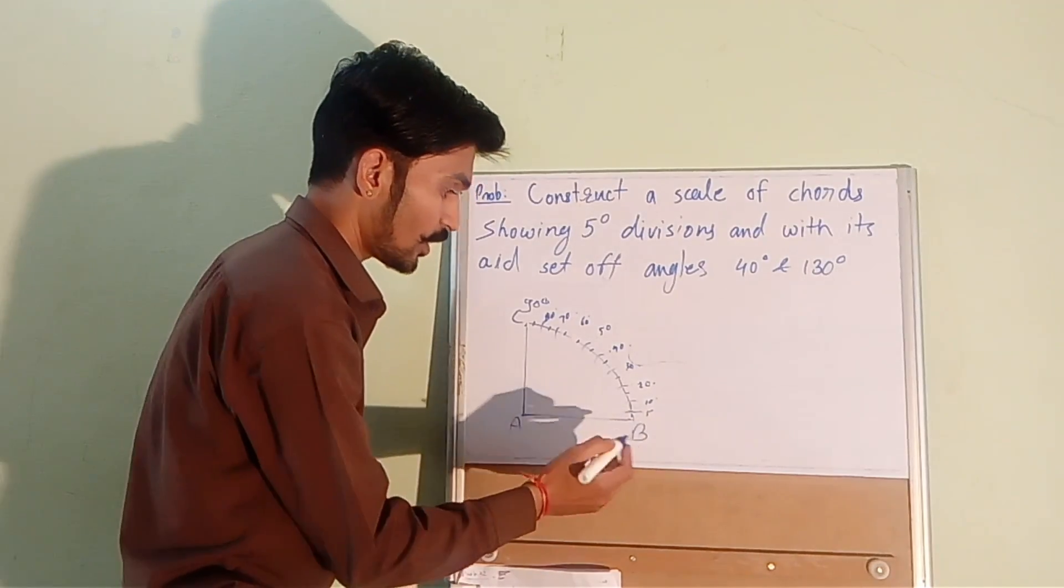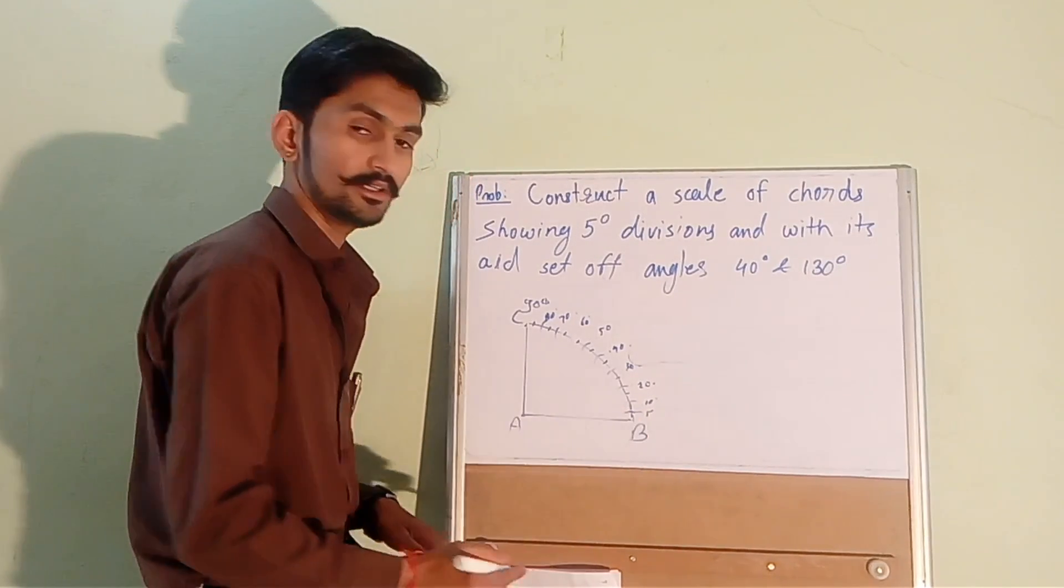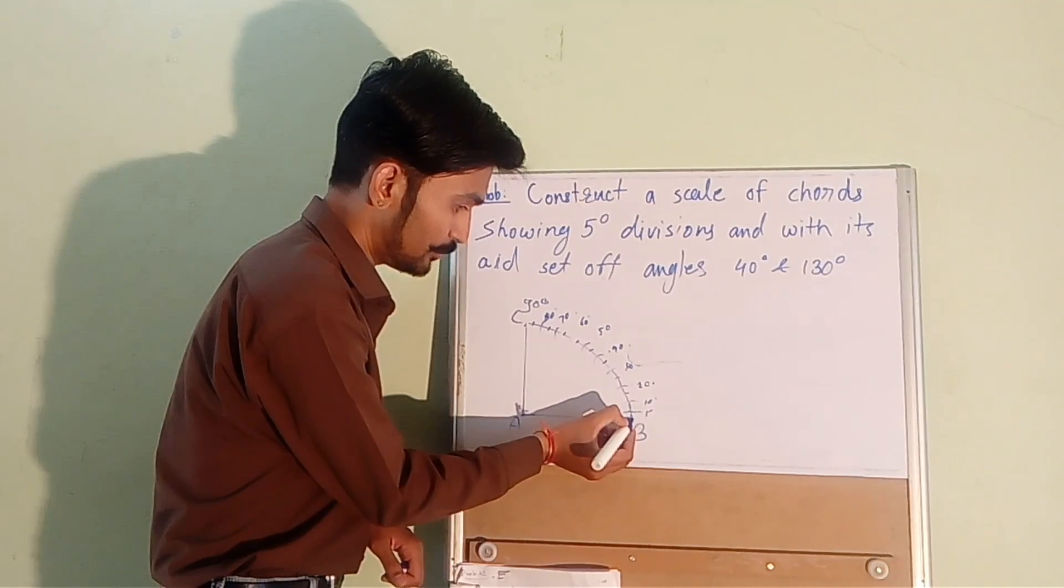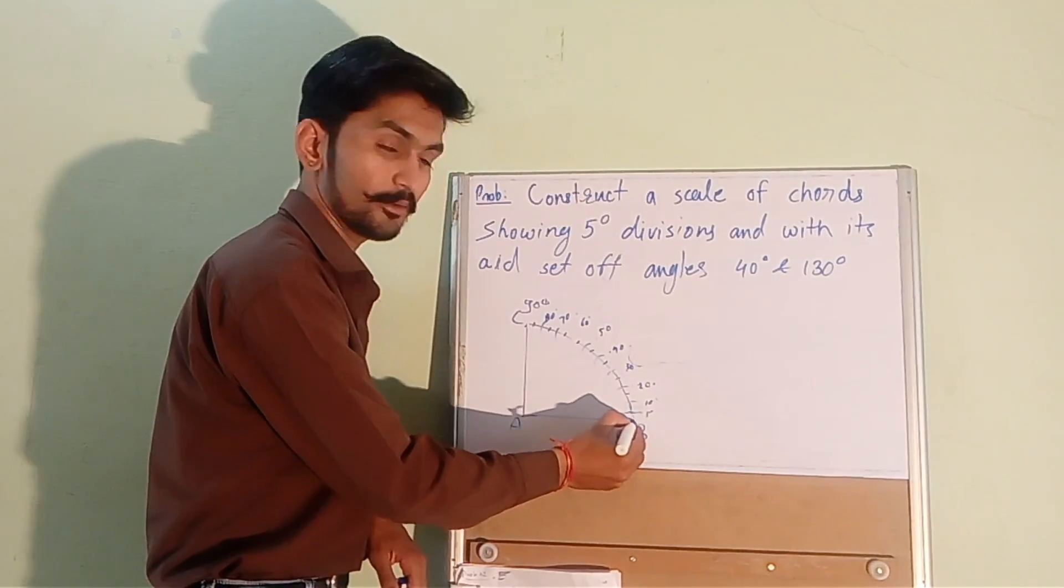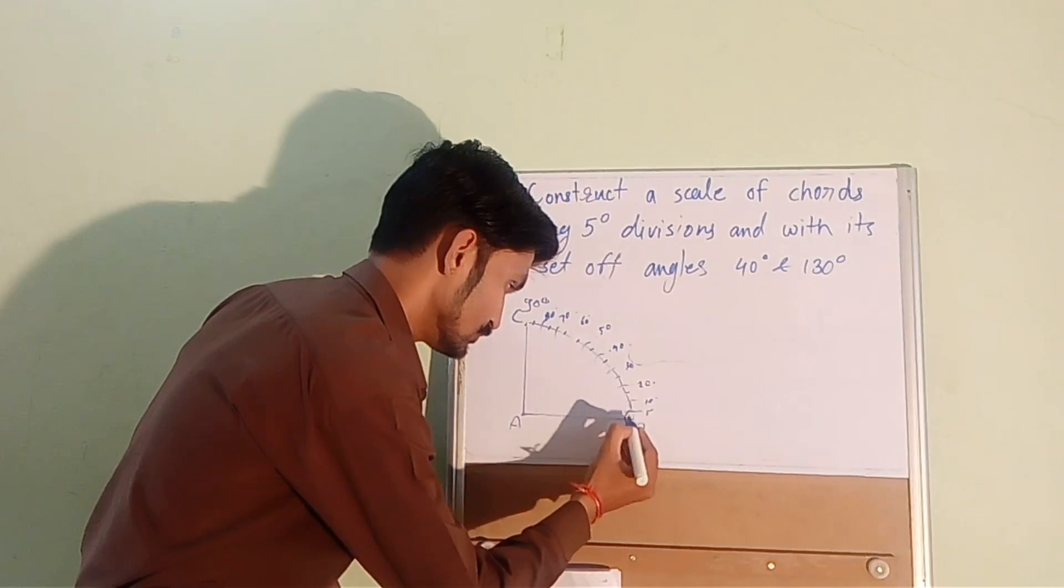Now draw arc from each point with radius B to 5 degree and B to 10 degree as B take B as center.